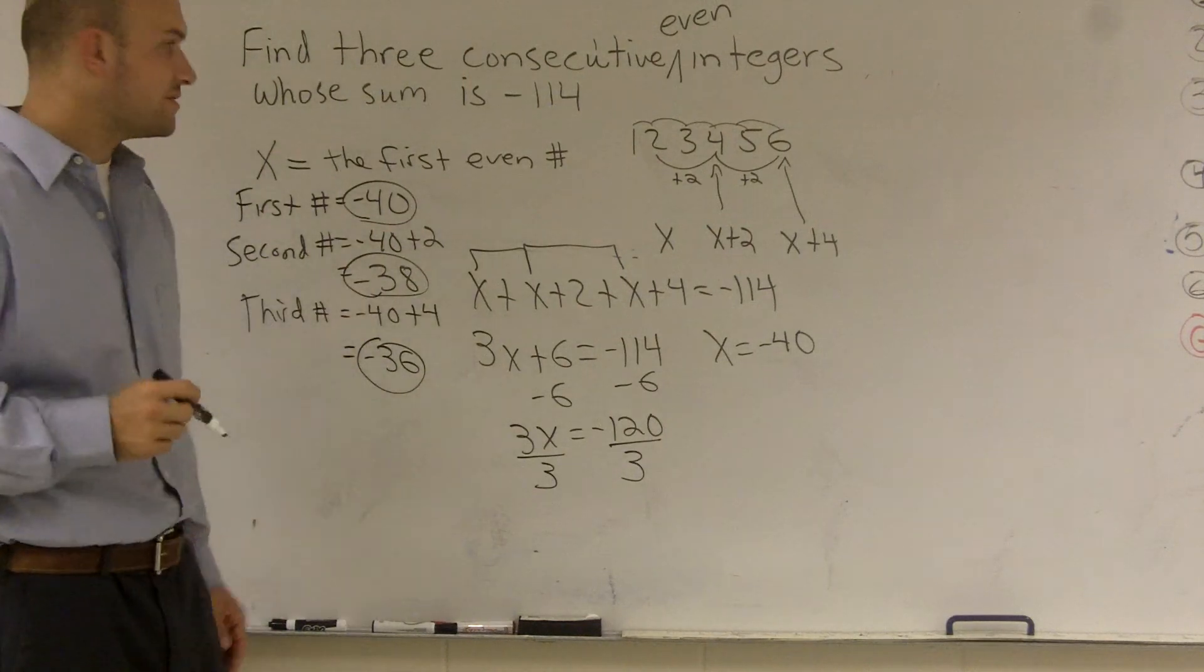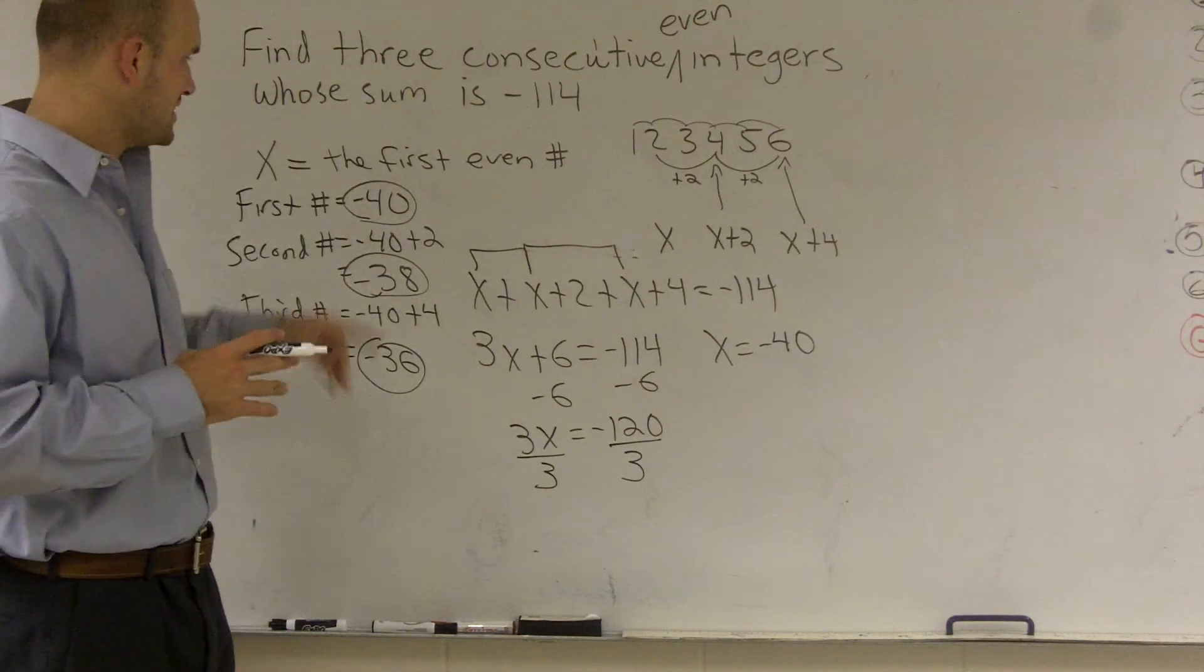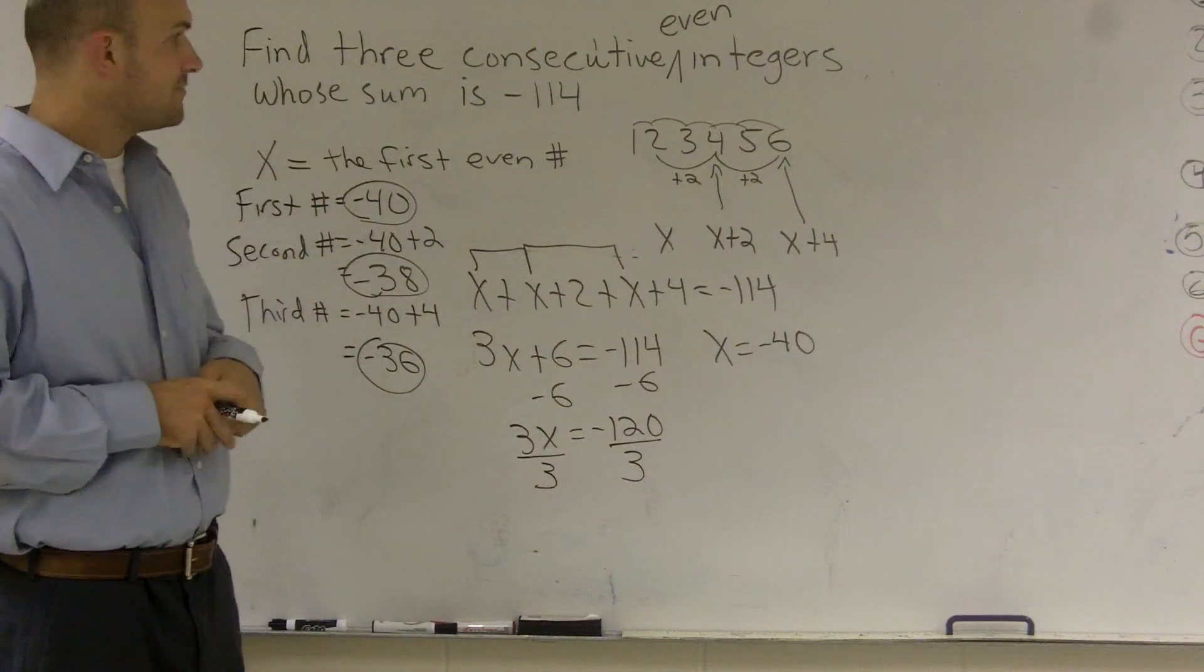Therefore, the three numbers, consecutive even numbers, that add up to negative 114 would be negative 40, negative 38, and negative 36.